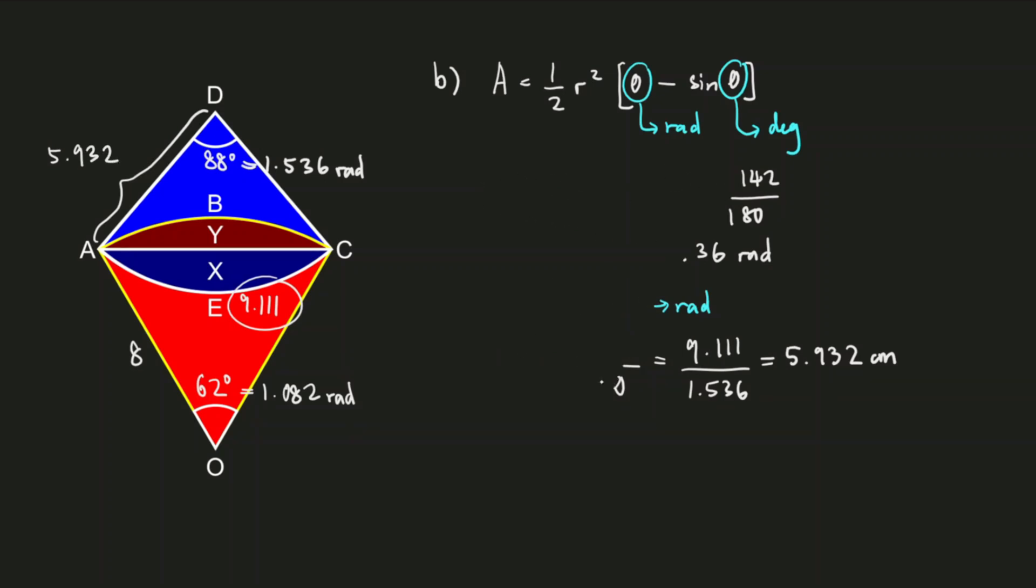And now we are ready to substitute our values into the formula for area. So the area will be equal to 1/2 r² - this time we are taking the radius of sector ADC which is 5.932 squared - and in our brackets, θ here is the angle of sector ADC which is 1.536, minus sin θ which is sin of 88 degrees. Again we use degrees whenever we use it with sine. And the value for the area is 9.44 centimeters square.